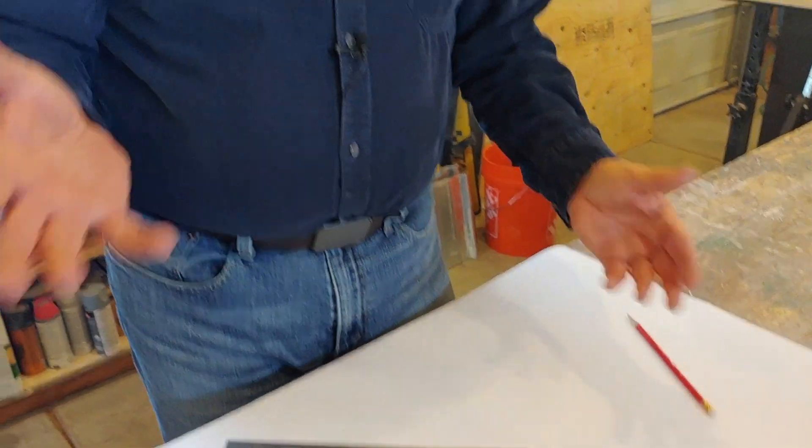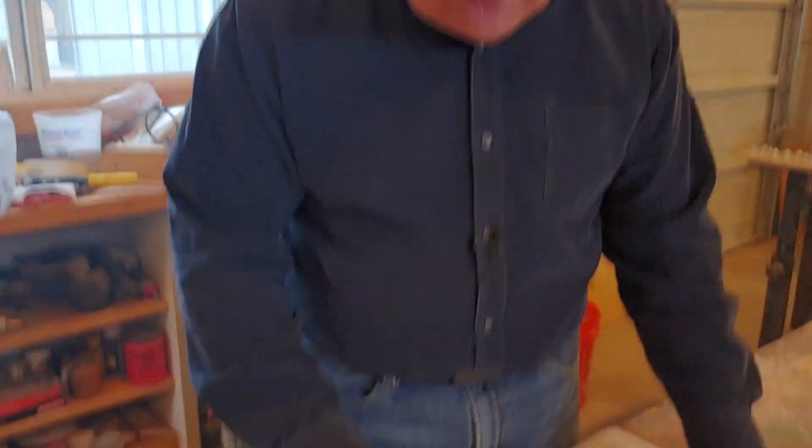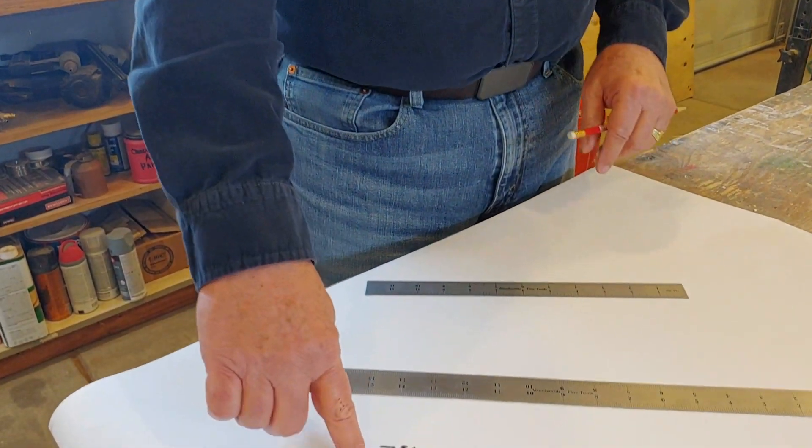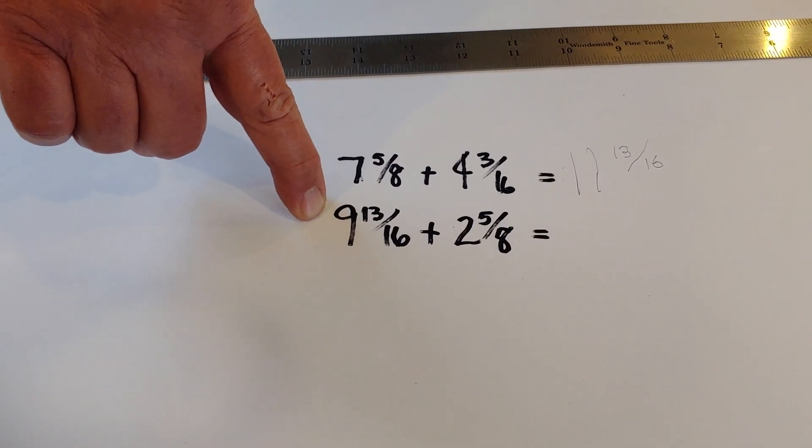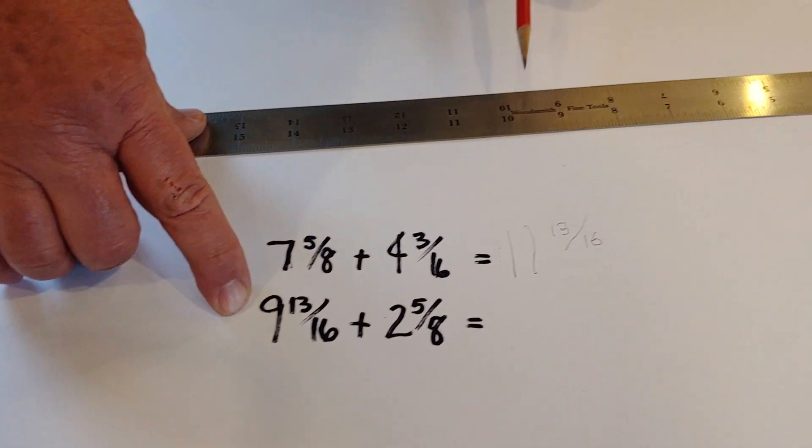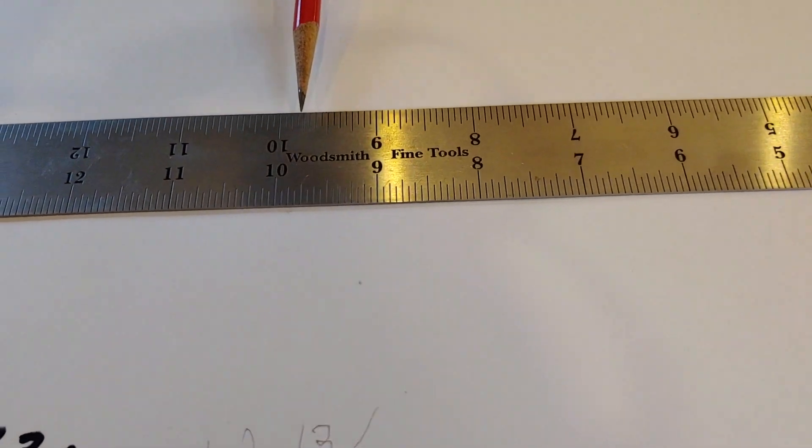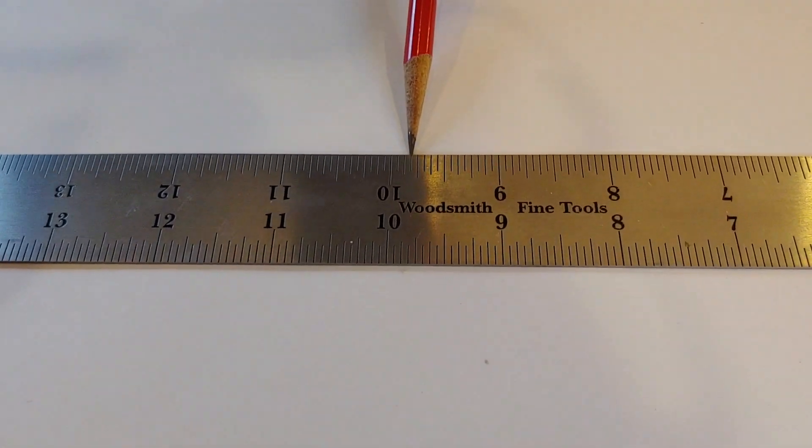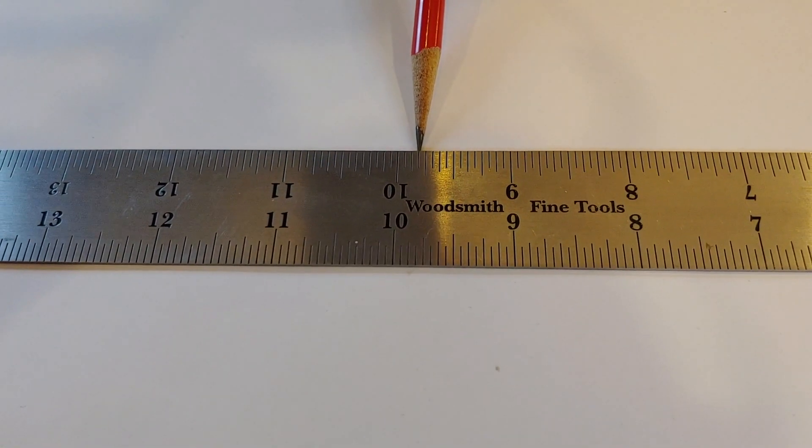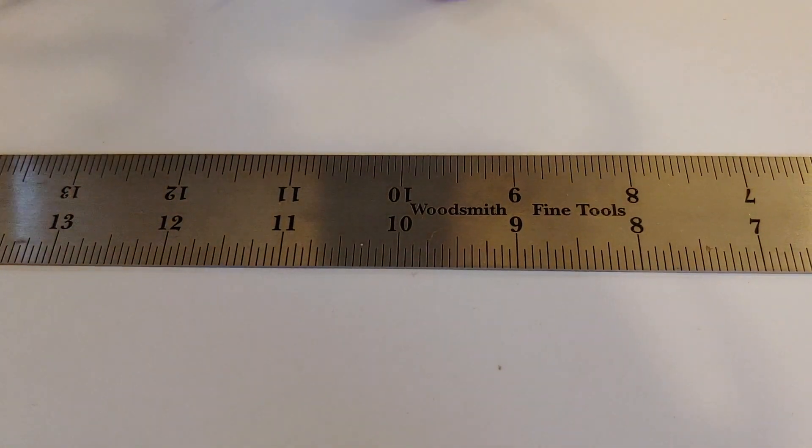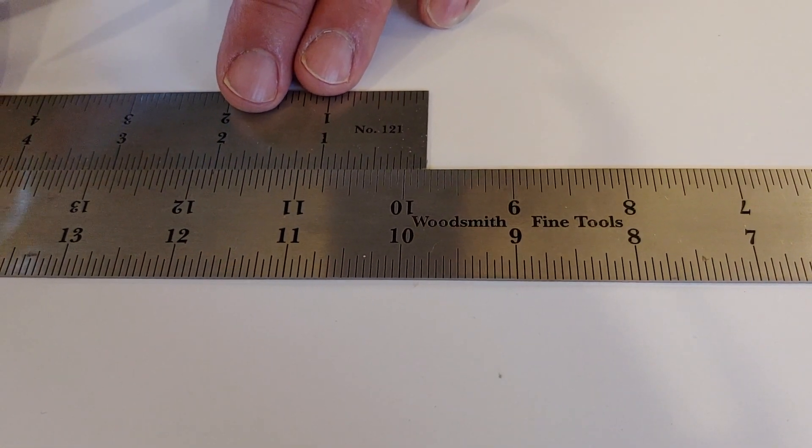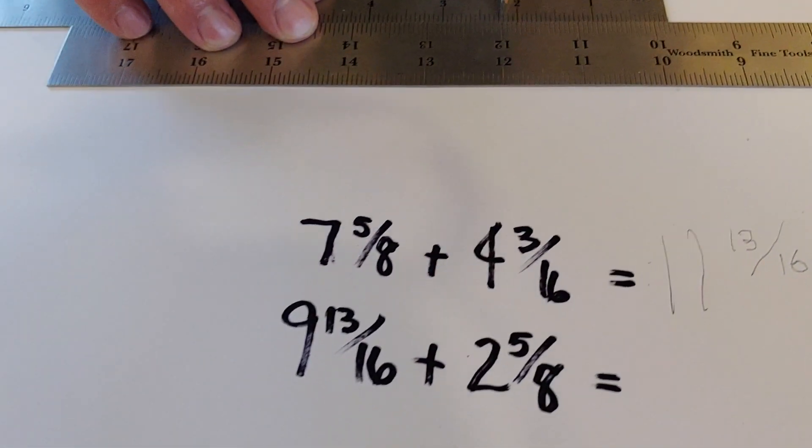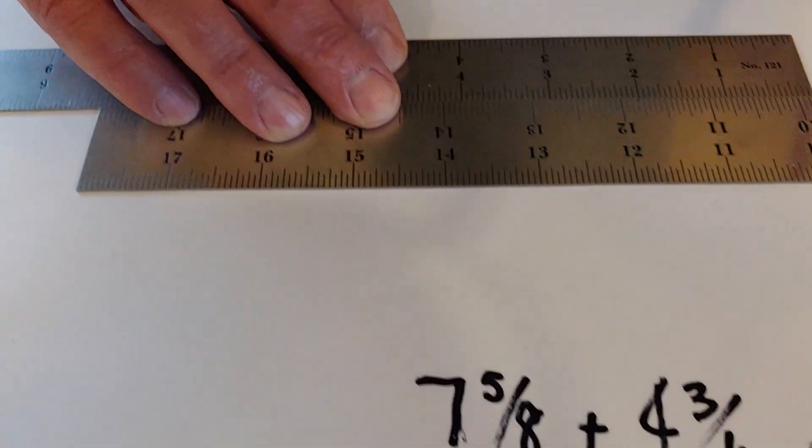Let's try it again just so we make sure this really works well. So we're going to do that again. We've got our numbers we're going to add right here. 9 and 13/16ths plus 2 and 5/8ths. Go to our first ruler, ruler A. Okay. 9 and 13/16ths is right there. And then we're going to butt the ruler right there at 9 and 13/16ths.